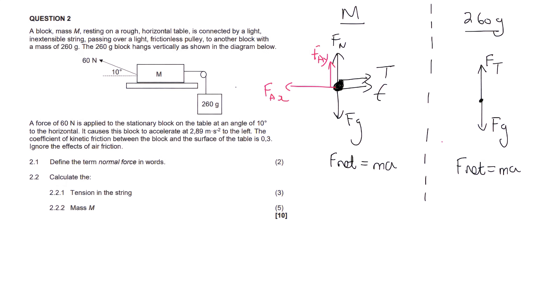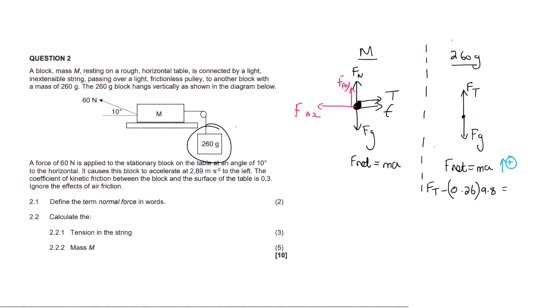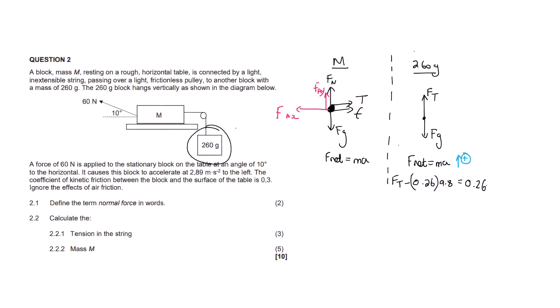Whereas this one is super simple. Check this out, guys. We use F net equals M A on that one. We say that up is positive. And then the only force is this tension, which we don't know. Gravity is just going to be the mass multiplied by 9.8. Now remember, this is in grams, so you'd want to say 0.26 for the mass, times by 9.8. And then that's equal to the mass, which is 0.26 grams. And then once again, the acceleration, 2.89, which they've given us.